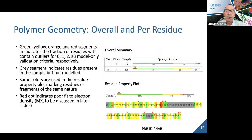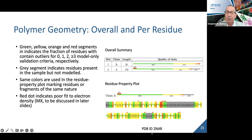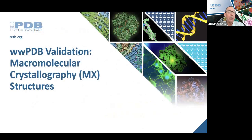There are summaries within the Worldwide Protein Data Bank validation report of both overall geometry quality and per-residue quality. You can see excerpts from the validation report depicted here for a particular PDB entry — PDB ID 2NAR, to use the NATO alphabet. All PDB ID codes are currently four alphanumeric characters; that will need to increase to a much larger number of characters because it won't be long until we run out of all possible four-letter alphanumeric combinations.